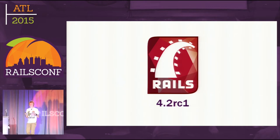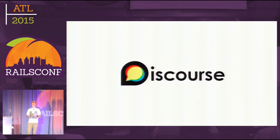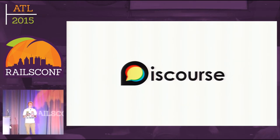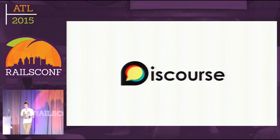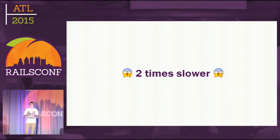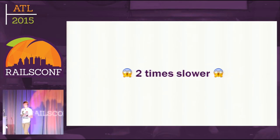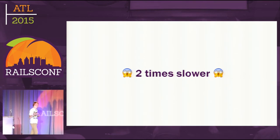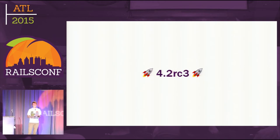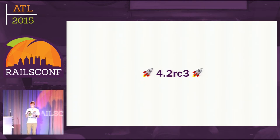Right after Rails 4.2 release candidate one was released, the Discourse team — they have quite a huge app — decided to upgrade on this release candidate just to try Rails 4.2, because they were really excited about all those ActiveRecord patches by Aaron and expected some performance boost from Adequate Record. But what they found, actually, is that Rails 4.2 RC1 was two times slower than Rails 4.1. That was very surprising. Luckily, this was just RC1, and after applying a lot of patches, they made Rails 4.2 RC3 as fast as Rails 4.1, and even a bit faster.